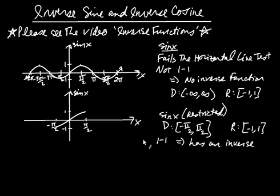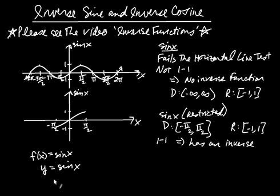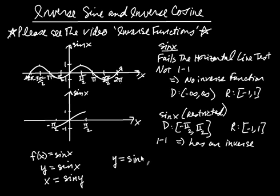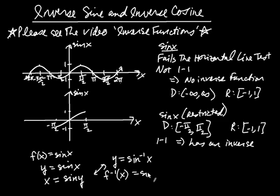To find the inverse, we write f(x) = sin x for restricted sine, then write y = sin x and switch x and y to get x = sin y. We then solve for y. Since we have no algebraic method, we invent a notation: y = inverse sine of x. These two expressions are logically equivalent, but this form has y isolated. Replacing f(x) with inverse notation gives us the inverse function, inverse sine.